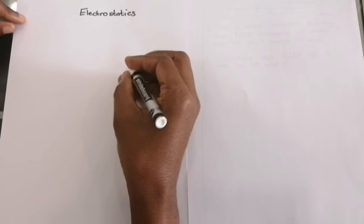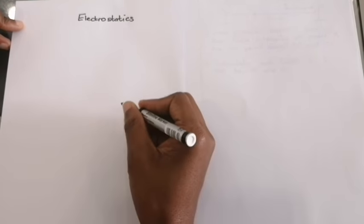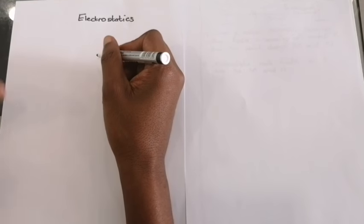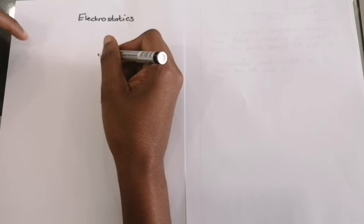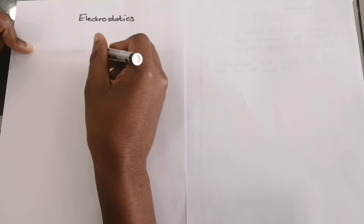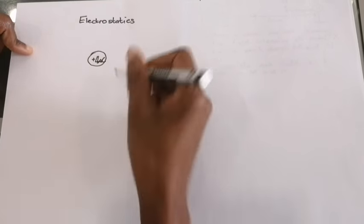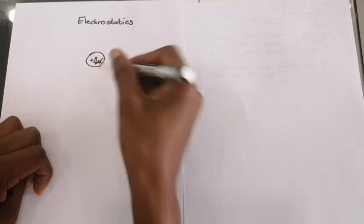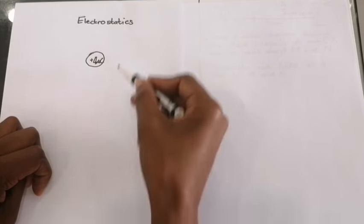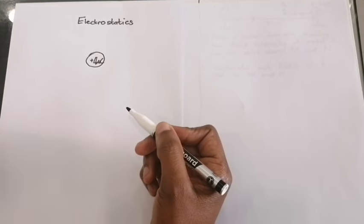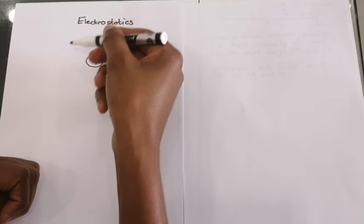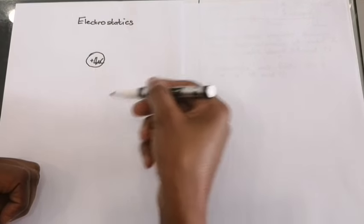Our lesson today is on electrostatic fields. I'm not going to go too much into details, but by definition, what is a field? We say it's a region in space where a force can be felt. Because we're talking about electrostatic fields, suppose we take a sphere that is charged — let's say it's positively charged, say four microcoulombs. If you were to place a charge around this point charge, it would actually feel a force.